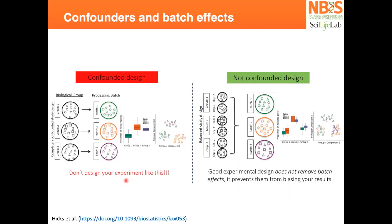A confounded design is when you have biological groups one, two, and three, and process them separately — batch one, batch two, batch three — or use different single cell methodologies for each one. That gives you wrong results because the differences you see will be due to technological or batch differences, not biology. What you want is to mix your different groups into different batches, with one sample from each group processed together, so all groups are in one batch. This non-confounded experimental design is the best way to avoid batch effects, so if you plan your experiment beforehand, this is the best approach.